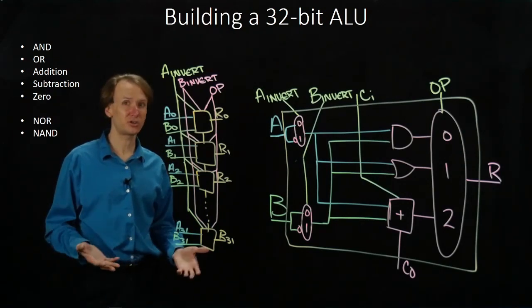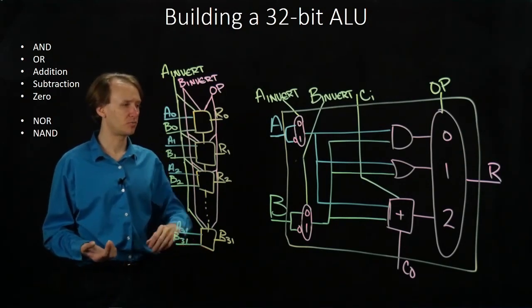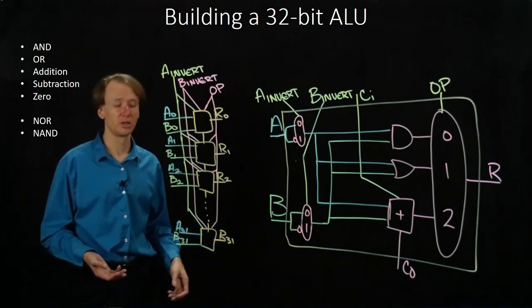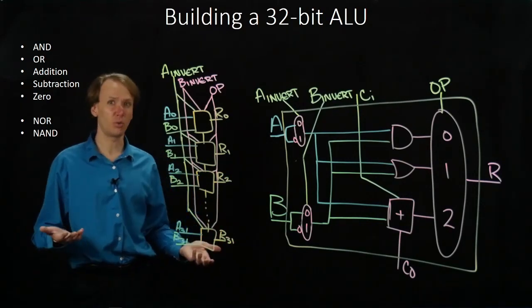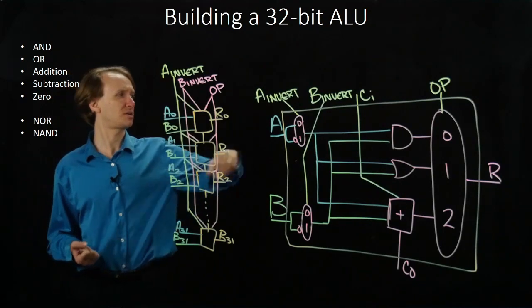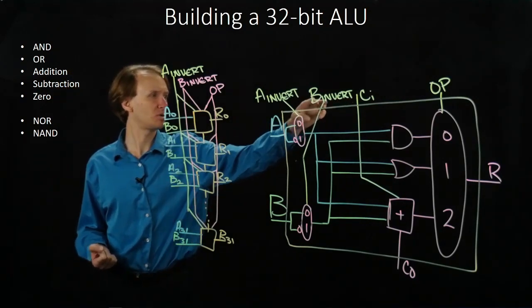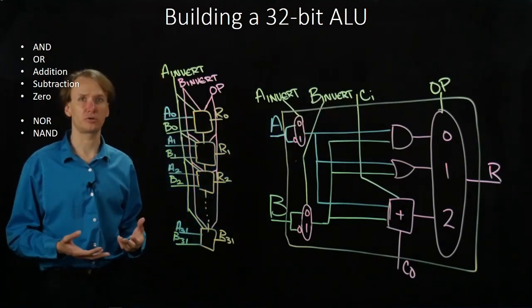If we're doing a logical operation instead, then we don't care what the adder does anyway. So it doesn't matter if the carry in is zero or one. Turns out the carry in is always the same as the B invert line, at least for the topmost ALU.